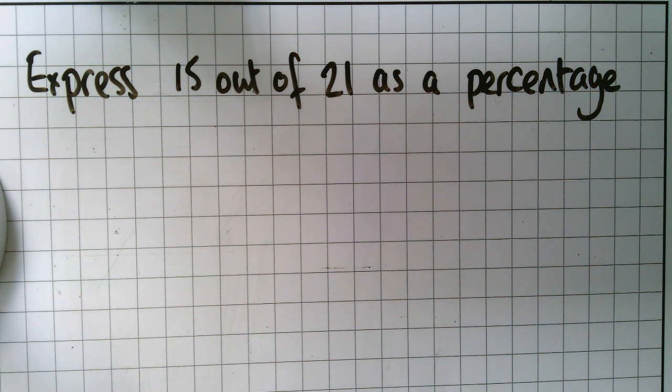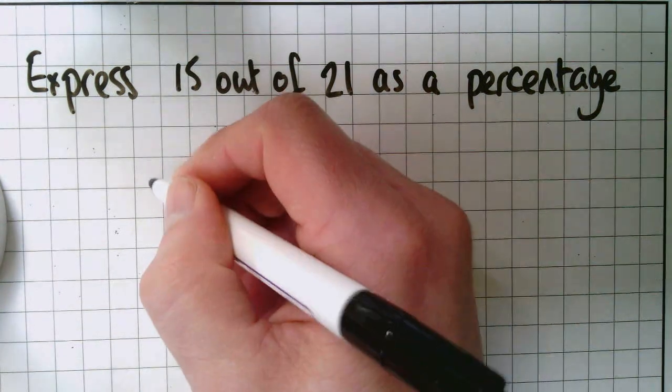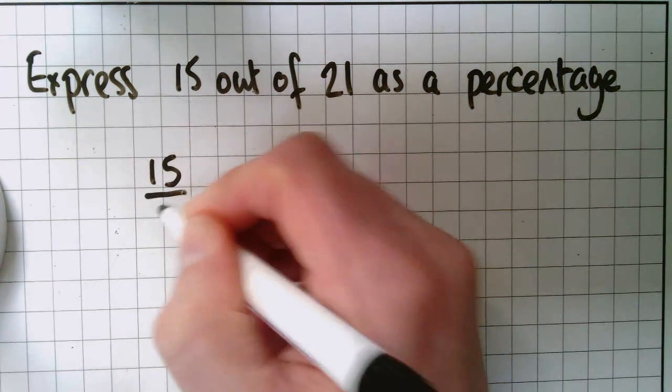So you start in the same way as you would do if you were doing it without the calculator and write it as a fraction which is 15 over 21.